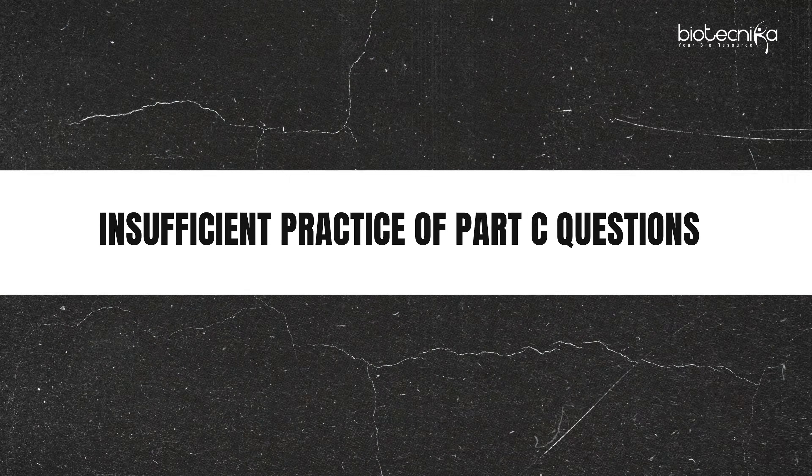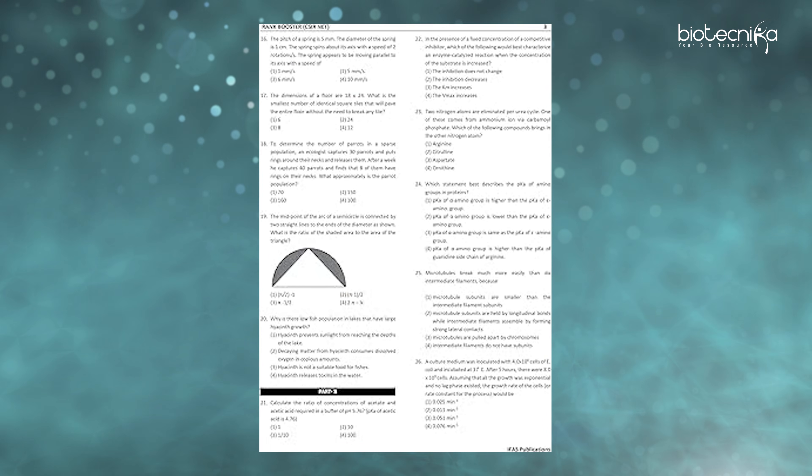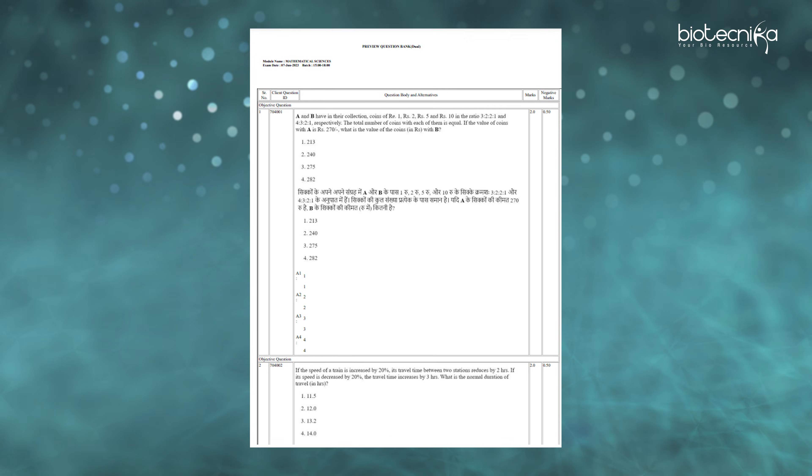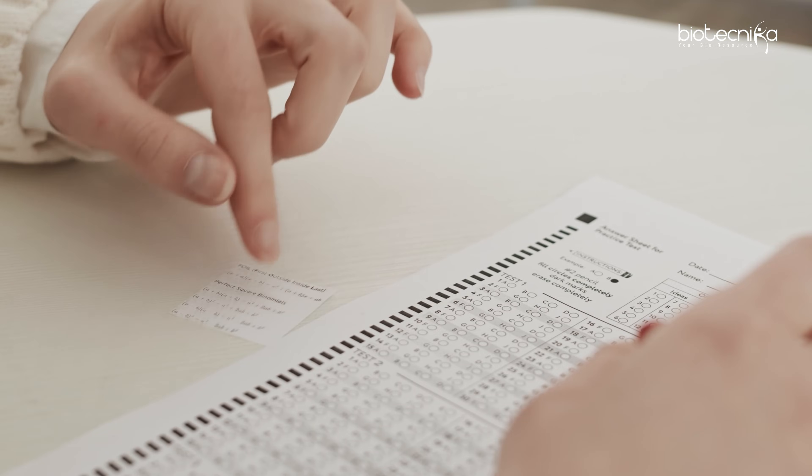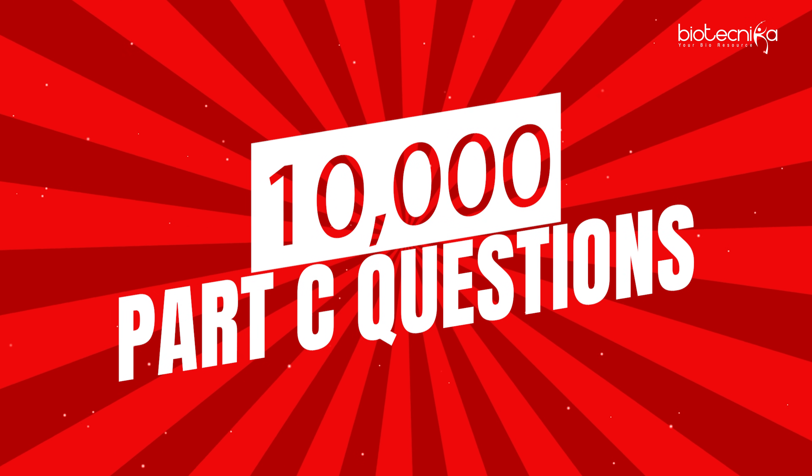The fourth mistake is insufficient practice of Part C questions. There are not enough Part C questions available for practice — all you've got are those CSIR NET previous question papers. But CSIR NET won't repeat those questions; they will have new ones. That is why Biotechnica has built a repository of 10,000 Part C questions, which you can access if you enroll with Biotechnica.